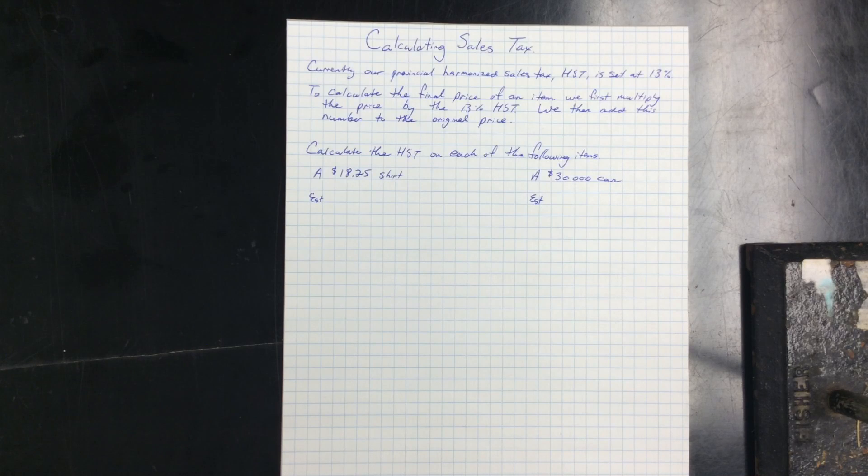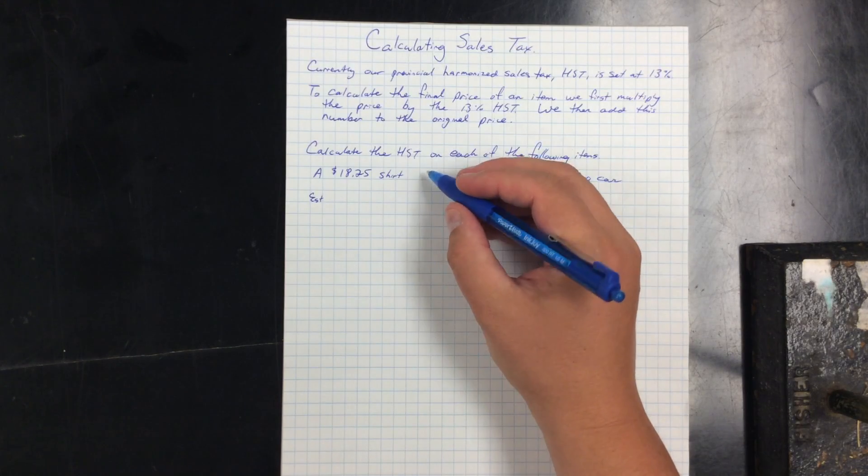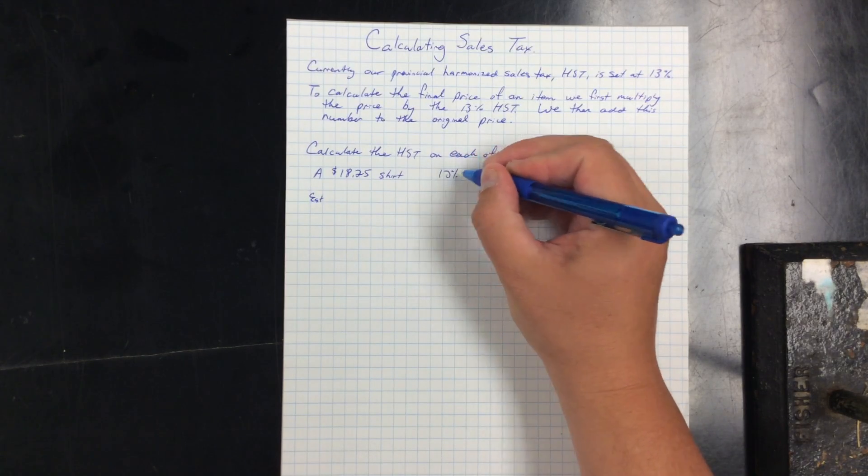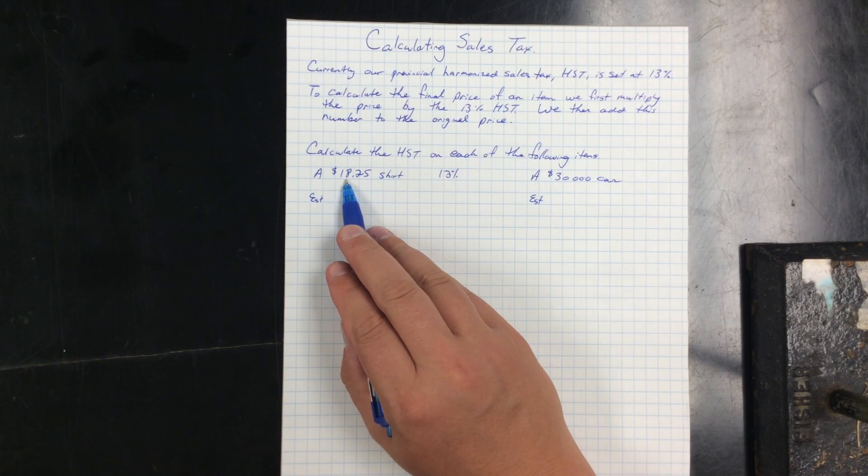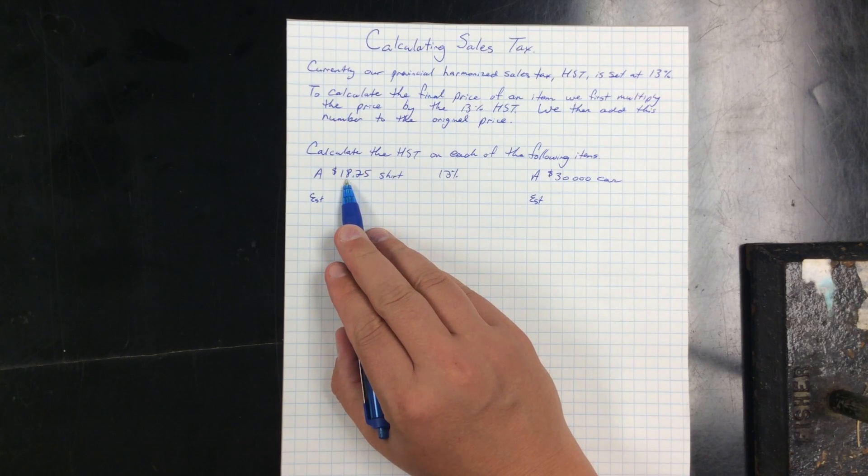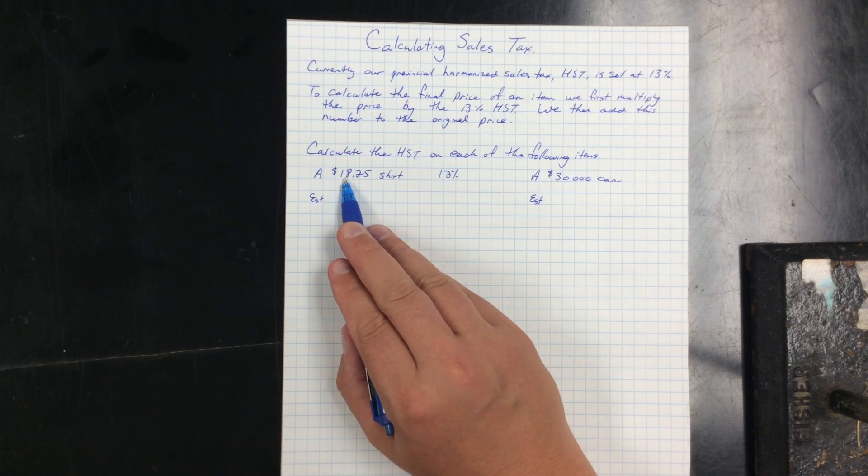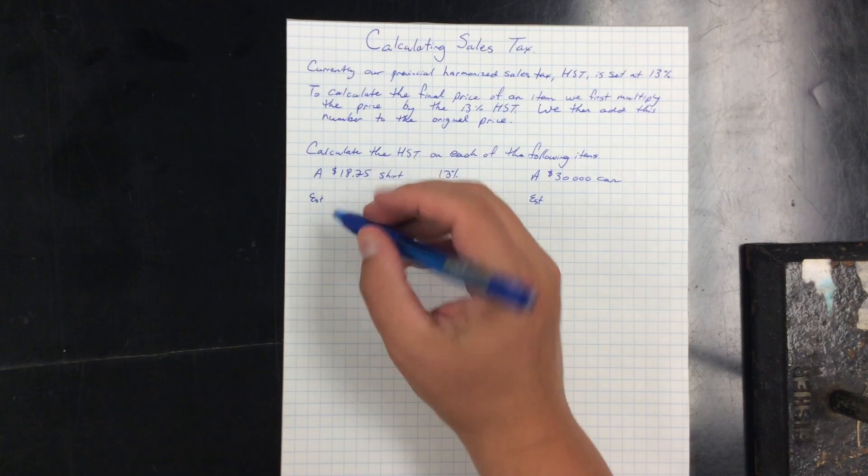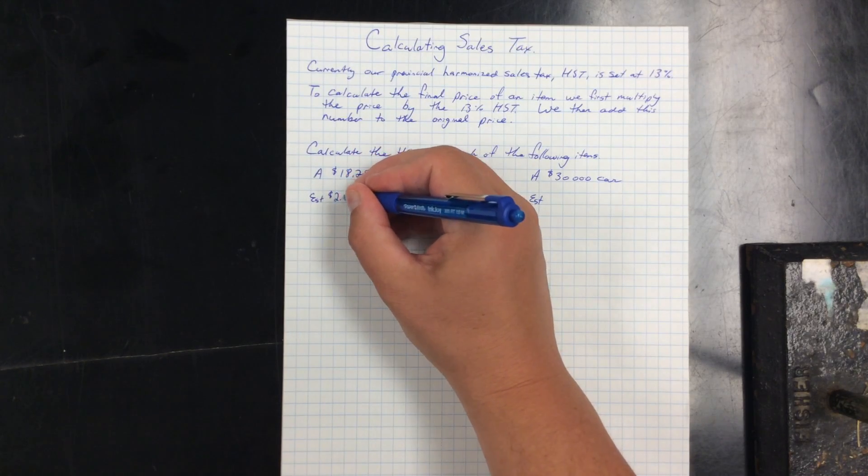So let's calculate the HST 13% for each of the following. First, a shirt that costs $18.25 with 13% HST. So I look at this really quickly and say that 10% would be $1.80, and if I go to 15% which is pretty close, another $0.60, so it should be close to $2.40. So that's going to be my estimate of tax, $2.40.